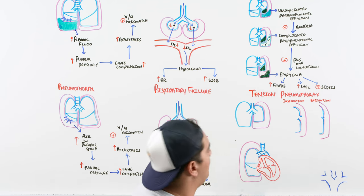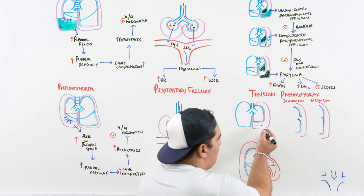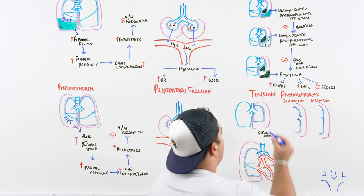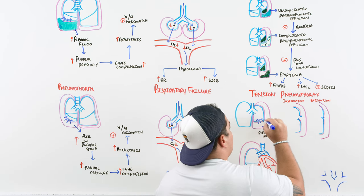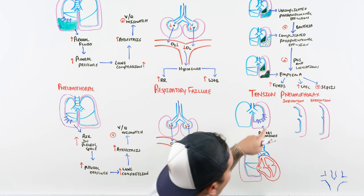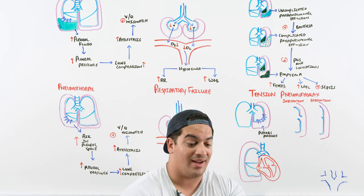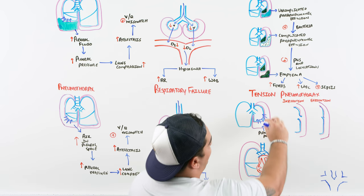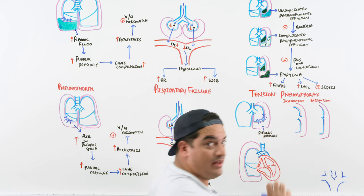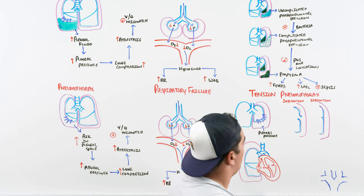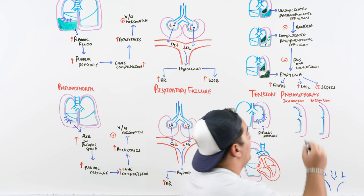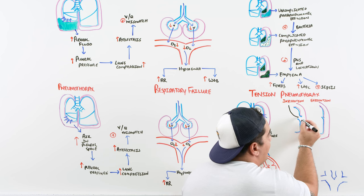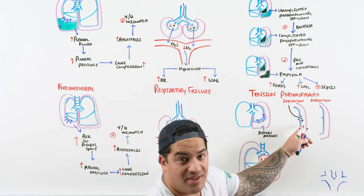The scariest complication — one you cannot miss — is tension pneumothorax. This is especially common with traumatic pneumothorax. During inspiration, air enters through a break in the lung parenchyma and visceral pleura into the pleural cavity. During expiration, the break acts as a one-way valve: the pleura recoapses, trapping air inside so it cannot escape.